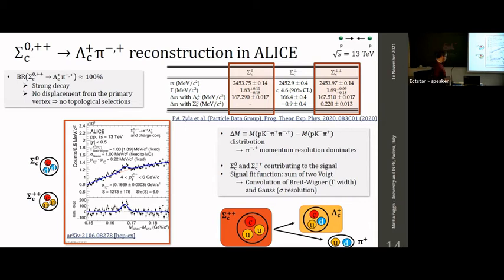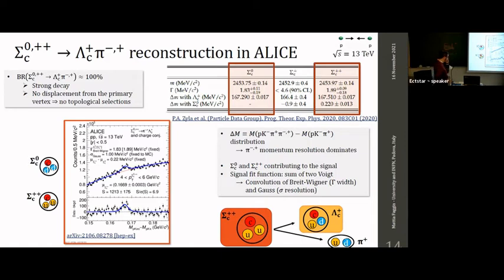The reconstruction of Lambda_c is also crucial for the reconstruction of Sigma_c baryons, because Sigma_c strongly decays with 100% branching ratio to Lambda_c plus a charged pion. Being a strong decay, there is no displaced topology — the Sigma_c decay point cannot be resolved from the secondary vertex, so no topological selections can be applied. The approach is to reconstruct the Lambda_c as described and combine it with a charged pion using an invariant mass technique to measure the signal, with contributions from both Sigma_c zero and Sigma_c plus-plus accounted for in the fitting.